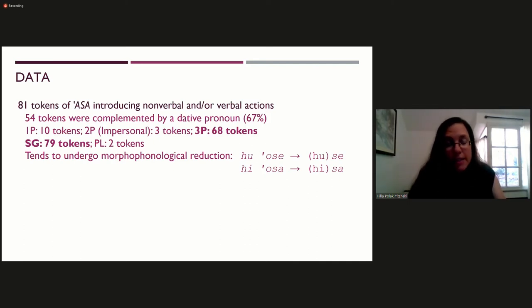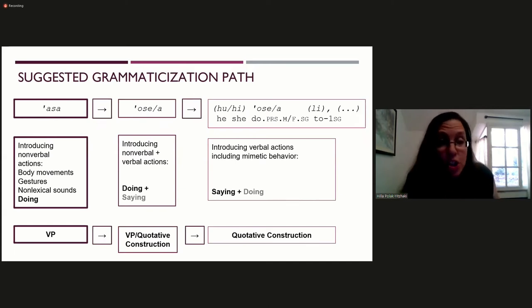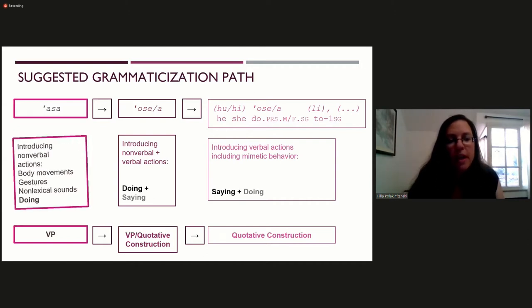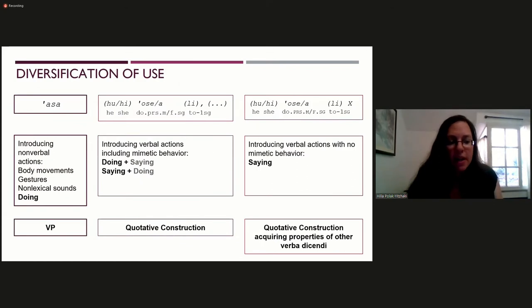This raises the question, how has this construction evolved? This suggested path describes how from a verb phrase introducing non-verbal actions such as body movements, gestures, and non-lexical sounds, evolved a construction introducing verbal actions accompanied by mimetic behavior. We can see that in the middle stage some tokens function as a verb phrase introducing non-verbal actions accompanied by verbal actions, and some tokens already function as a quotative construction. Thus, in the first stage the verb denotes doing, in the middle stage it denotes doing and saying, and in the third stage it has evolved into a do-quotative construction denoting saying and doing. When asa grammaticized as part of a quotative construction, it acquired properties characterizing verbs of saying and it displayed further developments and diversification of use.